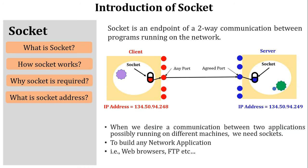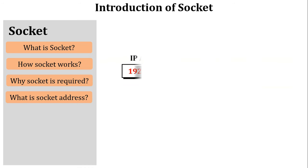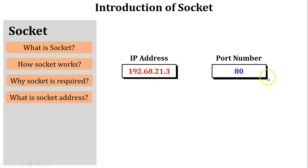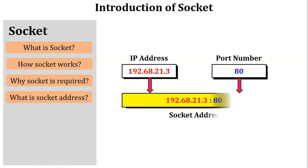Next, what is a socket address? The socket address is associated with the IP address and port address. For example, the IP address of the receiver is 192.68.21.3 and port number 80 is used at the receiver side. The purpose of the IP address is for host-to-host communication, and the port number is for process-to-process communication. When IP address and port number are combined, they create a socket address.